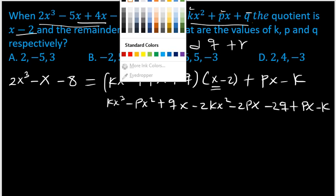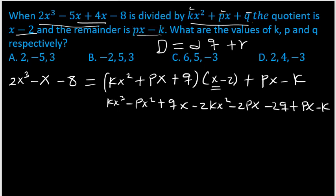Then we have to collect all the like terms together. The first like term is kx³, which is just alone. Then the square terms are here and here, so we can write them. Actually this is positive because when you multiply x times px, it's px² only. So p minus 2k times x².